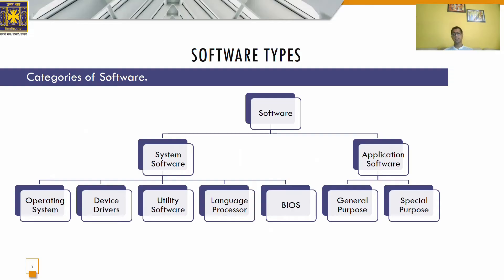System software can be defined as a collection of programs designed to operate, control, and extend the computer's processing capabilities. System software is a computer program that controls the system hardware and interacts with application software. Application software, on the other hand, is custom software that runs on system software. Based on need and purpose, application software can be divided into two types: general purpose and special purpose. System software can be divided into five subcategories: operating system, device driver, utility software, language processor, and BIOS.